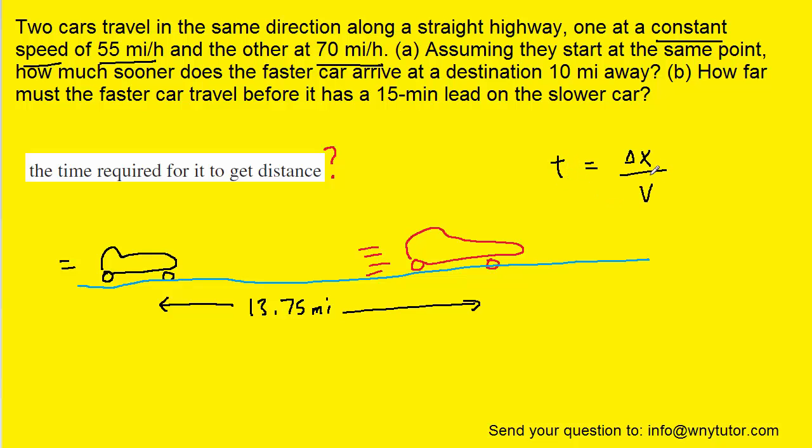Well, again, we have this equation which we had solved for earlier. We know the displacement that's needed. It's 13.75 miles. The challenging question here is what velocity to plug in. Should it be the slower car? Should it be the faster car? It turns out that we need what is called the relative velocity between the two cars.